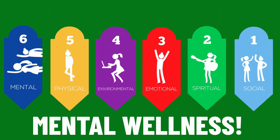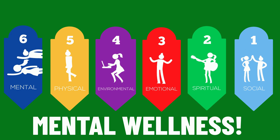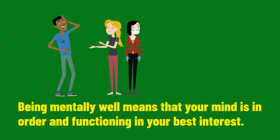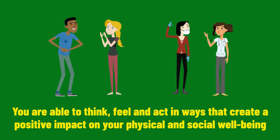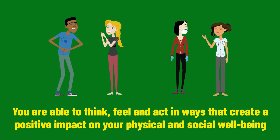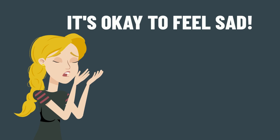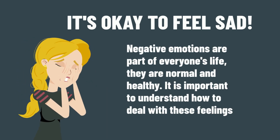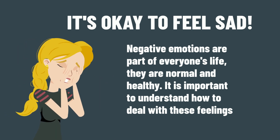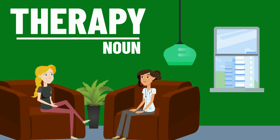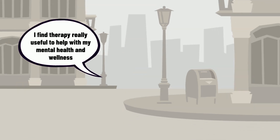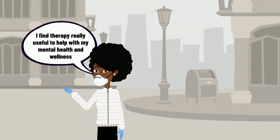The last area of wellness is mental wellness, where we bring all the different aspects and areas of wellness into one area to help our mental health. Being mentally well means that your mind is in order and functioning at its best, and you are able to think, feel and act in ways that create a positive impact on your physical and social well-being. It's really important to remember it's okay to feel sad — negative emotions are part of everyone's life; they are normal and healthy. It is important to understand how to deal with these feelings. A great way to help your mental wellness is therapy. Talking to a licensed and qualified professional can really help you understand your own mental well-being. Example: I find therapy really useful to help with my mental health and wellness.